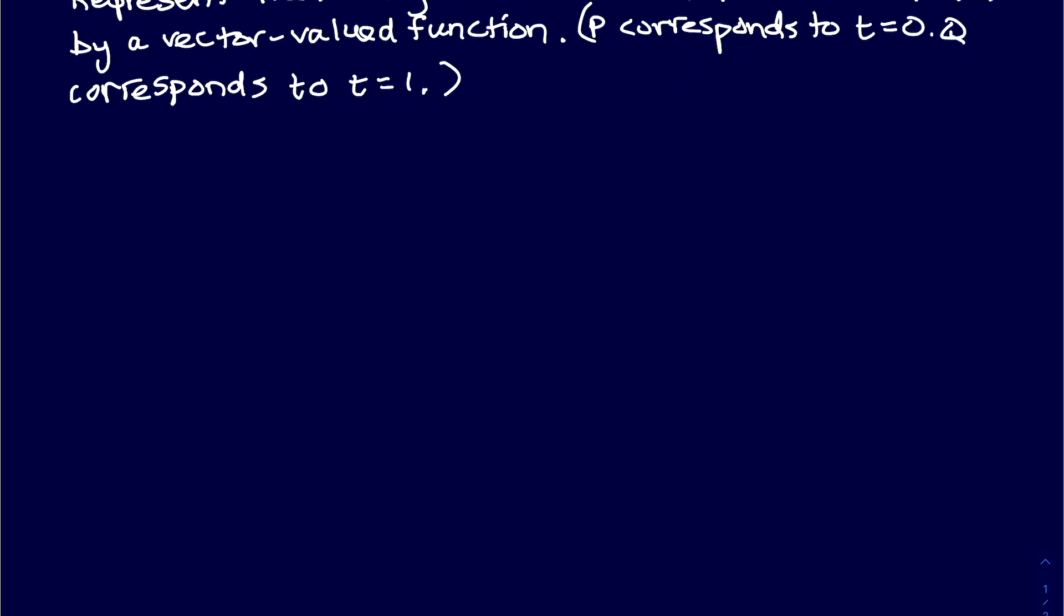Hey there, it's Shannon Malchick-Meyers, and today we'll be looking at how to represent the line segment from P, which is (-6, 5, -3), to the point Q, which is (-1, -3, 8), by a vector-valued function. In this case, P corresponds to t=0 and Q corresponds to t=1.